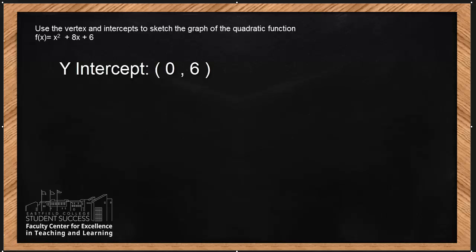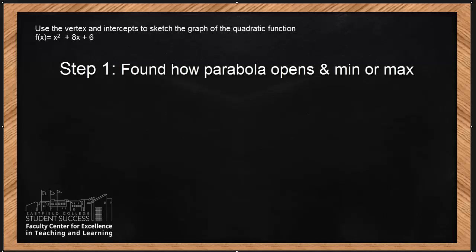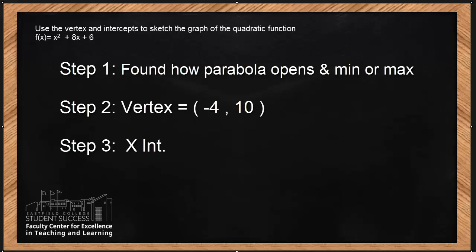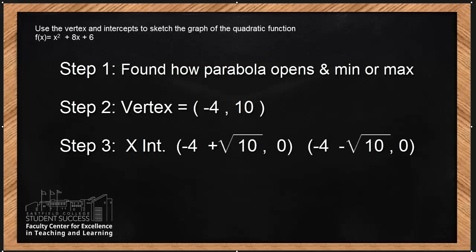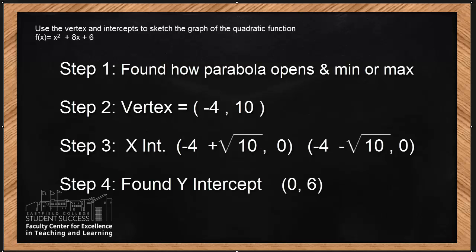Let's go back and see what we have done. Step number one, we found whether our vertex was a minimum or a maximum. Step number two, we found the vertex: negative 4, negative 10. Then in step number three, we found our x-intercepts — we have two of them: negative 4 plus square root of 10, zero, and negative 4 minus square root of 10, zero. We also found our y-intercept.